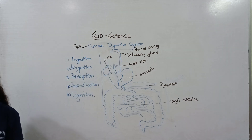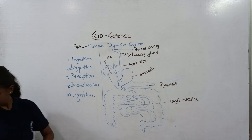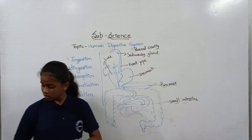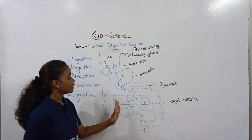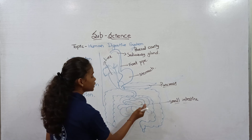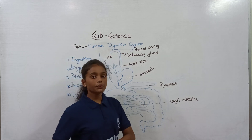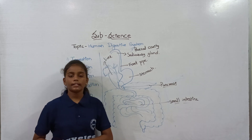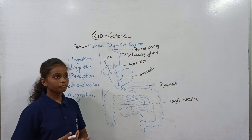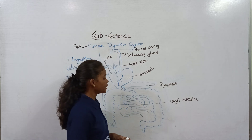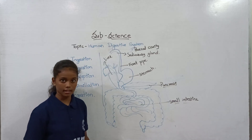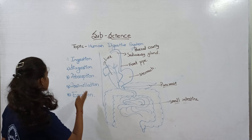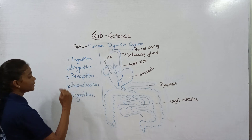Digestion is completed in the small intestine. Here, some nutrients and water are absorbed. So the absorption process begins and the digestion process is completed in the small intestine.